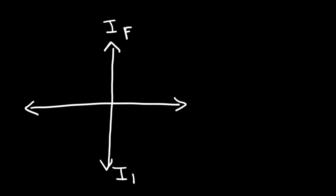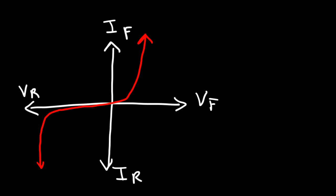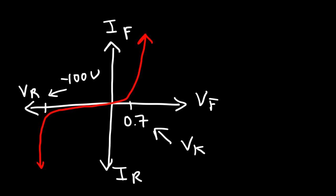We can make a graph with current on the y-axis and voltage on the x-axis. IF stands for forward current, IR is the reverse current, VF is forward voltage, and VR is reverse voltage. The resulting graph shows that at around 0.7 volts — known as the knee voltage — the diode begins to conduct in the forward direction. In reverse bias, there is a breakdown voltage, which could be around negative 50 to negative 1000 volts depending on the diode's physical characteristics. If you apply a large enough reverse voltage you can force the diode to conduct, but you don't want to operate it that way in practical circumstances.